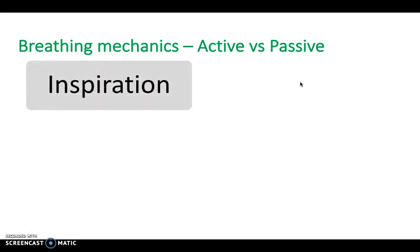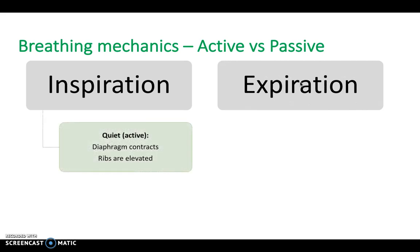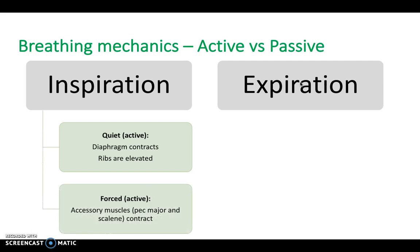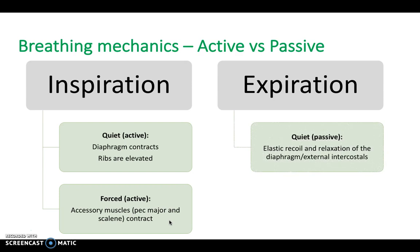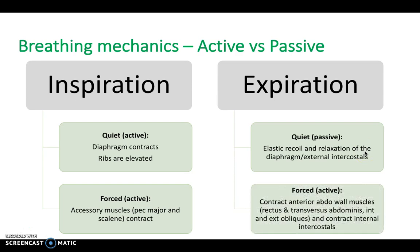The difference between active and passive: during quiet inspiration, the diaphragm contracts and the ribs are elevated. Forced inspiration additionally recruits accessory muscles including pectoralis major and the scalenes, further increasing thoracic volume. For quiet expiration, elastic recoil and natural relaxation of the diaphragm and external intercostals suffice. Forced expiration recruits the anterior abdominal wall muscles — rectus abdominis, transversus abdominis, internal and external obliques — as well as the internal intercostals.